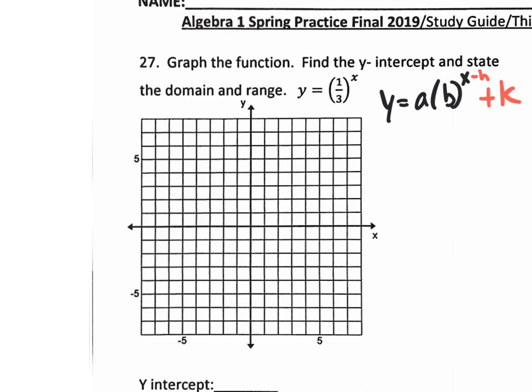If the base is less than 1, it's going to start up somewhere up here and it's going to decay from left to right. So let's understand that — it will help you find the answer. Not only that, the k value is your up or down shift. Your k value is your up or down shift, and this kind of is related to parabolas that are in vertex form.